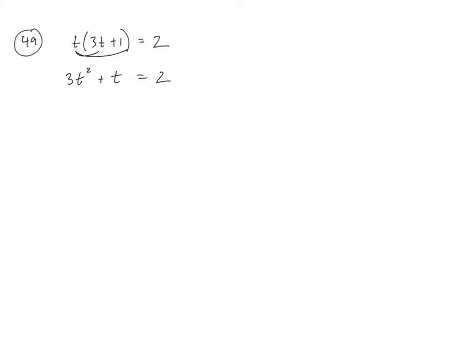It is equal to 2. If it's quadratic, I need to bring everything over to this side. So it'll be 3t² + t - 2 = 0. And now I need to factor this.